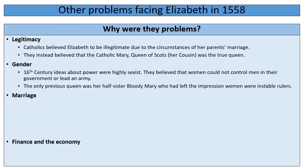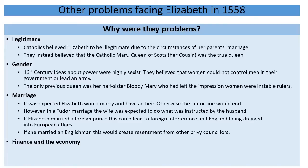Linked to the issue of gender is the issue of marriage, because Elizabeth was the last of the Tudors. It was expected therefore that she would marry and have an heir — preferably a son — because without this the Tudor line would end and her dynasty would be over. But this caused problems because in a Tudor marriage the wife was expected to do what was instructed by the husband. This couldn't tally with Elizabeth as monarch, appointed by God and being the single most important person in the country. How could she be a good monarch yet also a good Tudor wife following her husband's instructions?